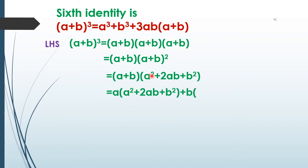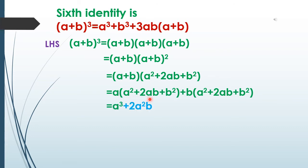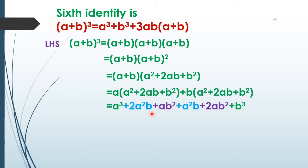Expanding: a × a² = a³, a × 2ab = 2a²b, a × b² = ab²; then b × a² = a²b, b × 2ab = 2ab², b × b² = b³. So we get a³ + 2a²b + ab² + a²b + 2ab² + b³.